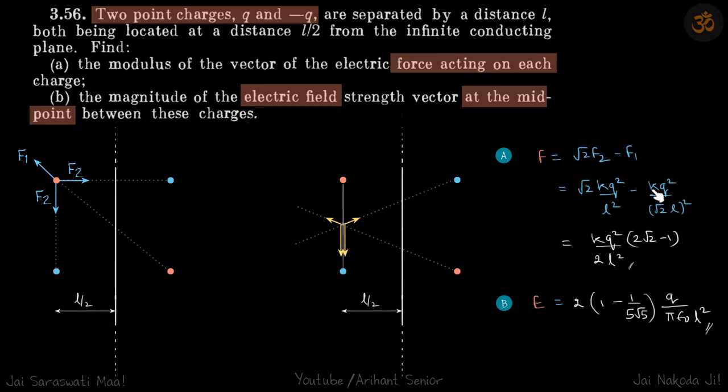F2 is kq²/l², and F1, because of the diagonal, is kq²/(root 2 l²). You simplify this and you'll get your answer. Second, we need to find the electric field at the midpoint of these charges.